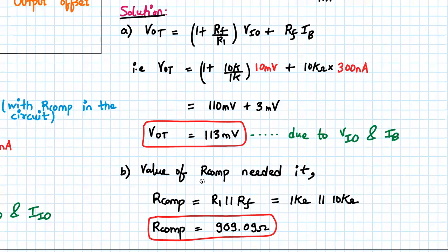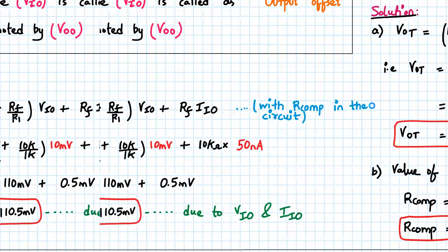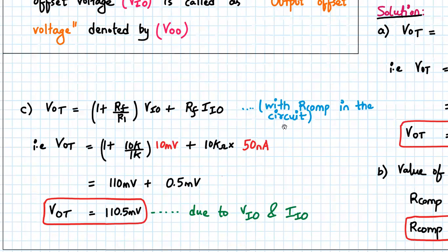Now the value of RCOM needed is RCOM equal to R1 parallel to R2, which will be 1K parallel to 10K, which will be 909.09 ohms. It's pretty straightforward.